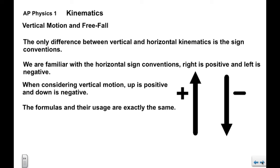Now lots of good news with this one. The only difference between vertical and horizontal kinematics is the sign convention. We're familiar with the horizontal sign convention: right is positive and left is negative. When we consider vertical motion, very simply up is positive and down is negative. The formulas and their usage are exactly the same in vertical motion as they were in horizontal.